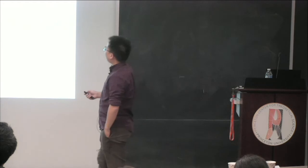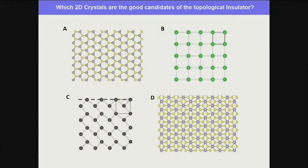I'll give you three types of crystals. Different colors mean different atoms, and they have different crystal structures. I'll give you 30 seconds to look at them. If you'd like to choose one, two, or three of them to study for discovering new topological insulators, which one would you choose? Liam already told you everything. If you have a good answer and are comfortable about your choice, then you don't need to listen to my next few slides.